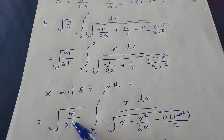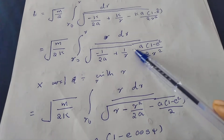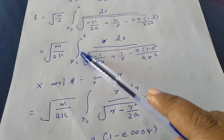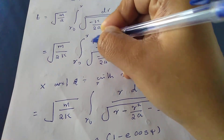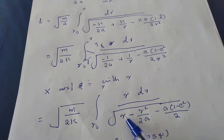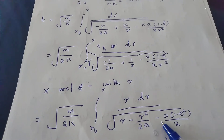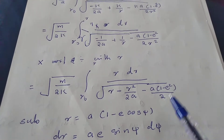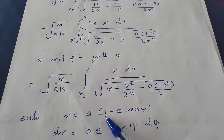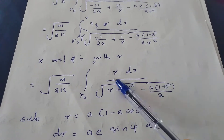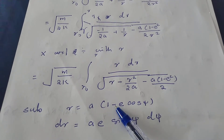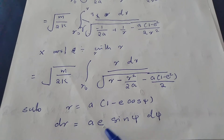We get square root of m by 2 times k, r dr divided by r times square root of [r minus r squared by 2a minus a(1 minus e squared) by 2]. We define the substitution r equals a(1 minus e cosine psi), so dr equals a times e times sine psi d psi. We substitute this here. Now substituting, the value equation gives t equals square root of m by 2k times a(1 minus e cosine psi) times a e sine psi d psi.